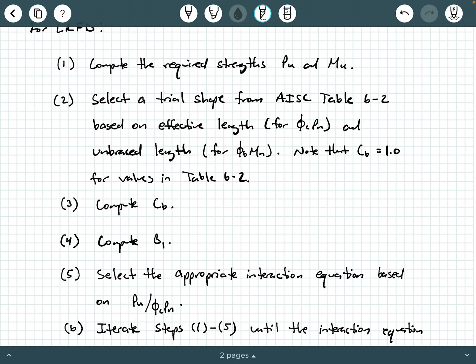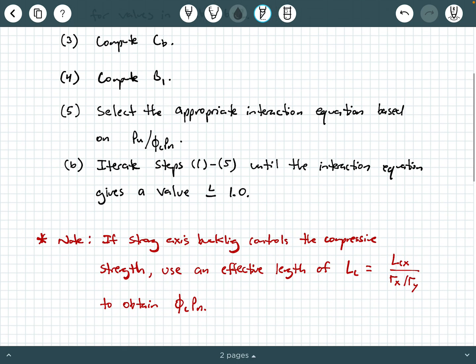A last little thing to note: if you have strong axis buckling controlling for your section for the compressive strength, you need to adjust your effective length based on LC equals LCX divided by this ratio RX over RY when you are obtaining phi C PN from table 6.2. You've probably done something like this before when you've explored just regular column design. But you got to keep that in mind if you happen to have a case where maybe bracing in different directions causes strong axis buckling to control the compressive strength instead of weak axis buckling.